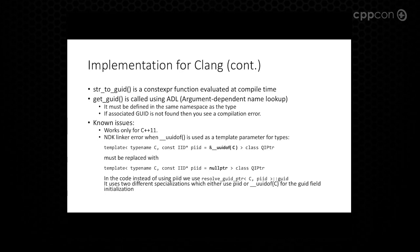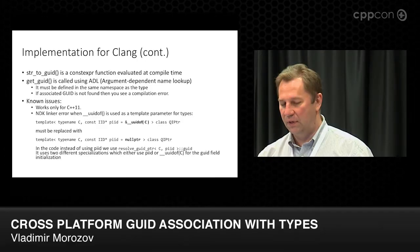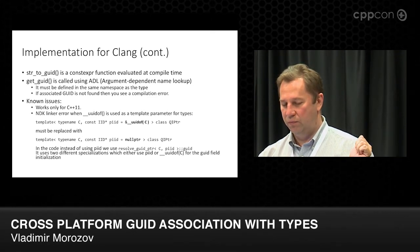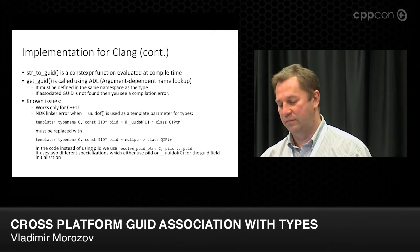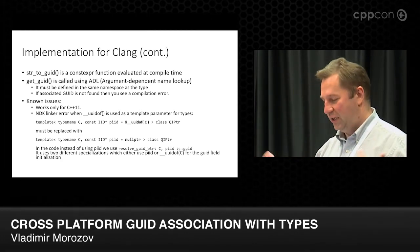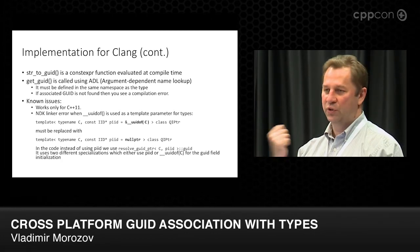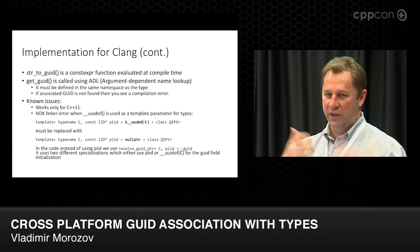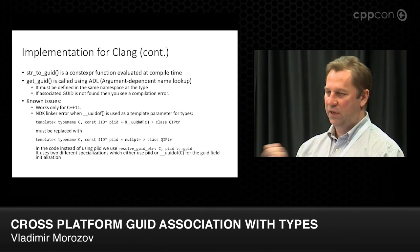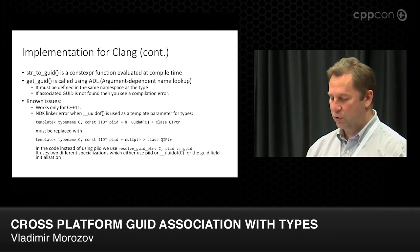To summarize: we have string-to-GUID as a constexpr conversion function, and we have a get-GUID method. One limitation is that it works only for C++11, because we rely on constexpr. If your code is still using C++98 or C, this code will not work.